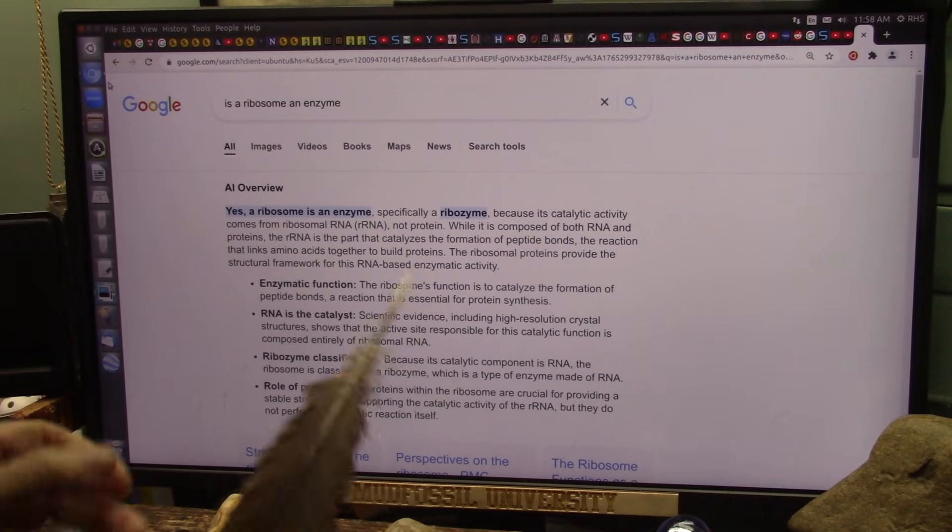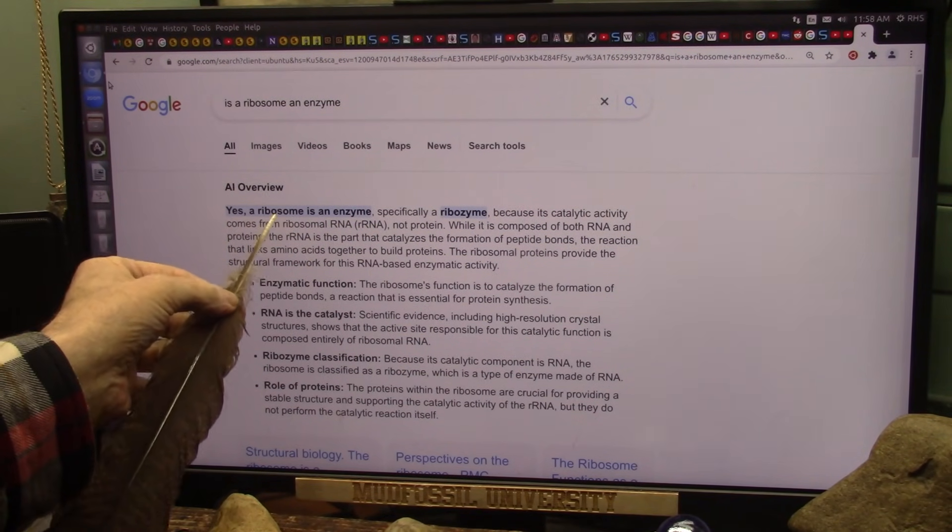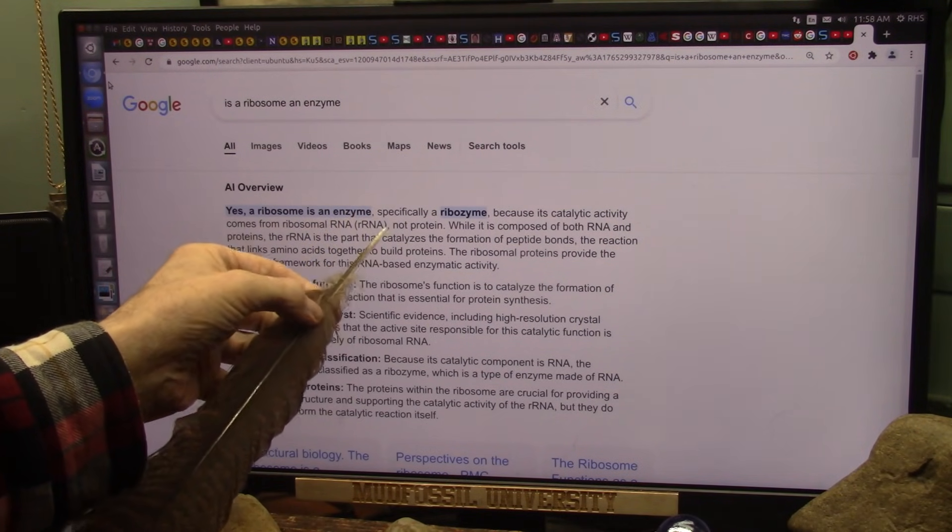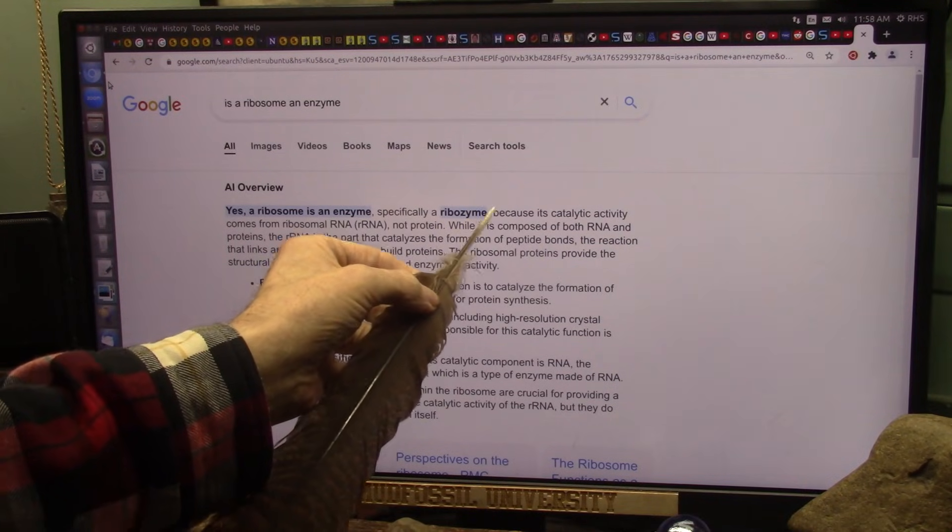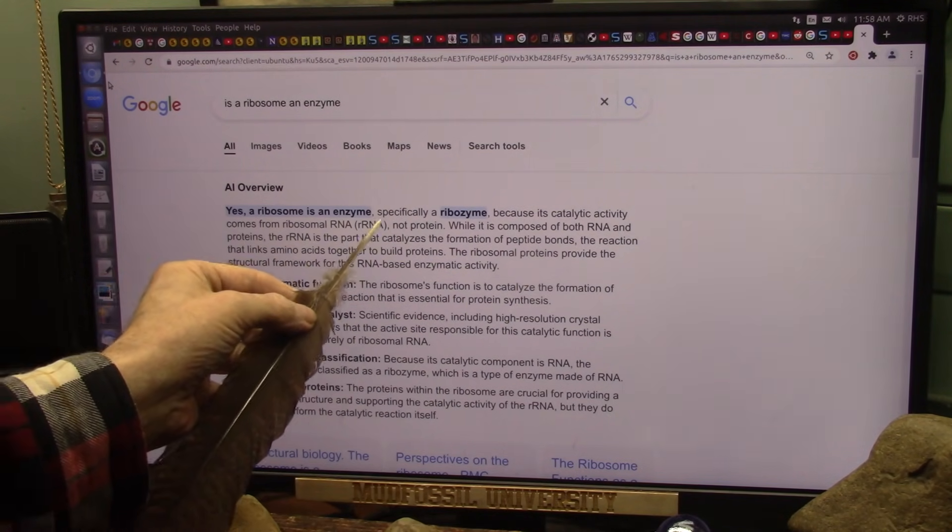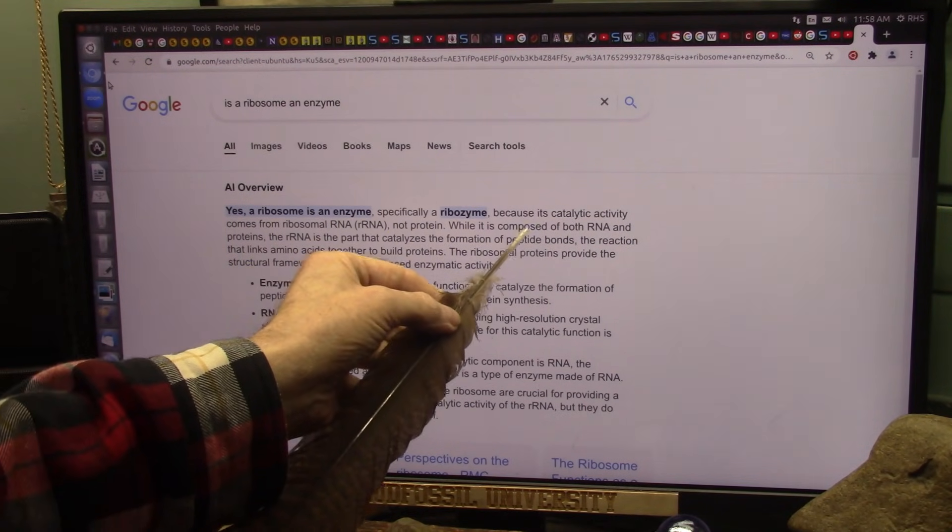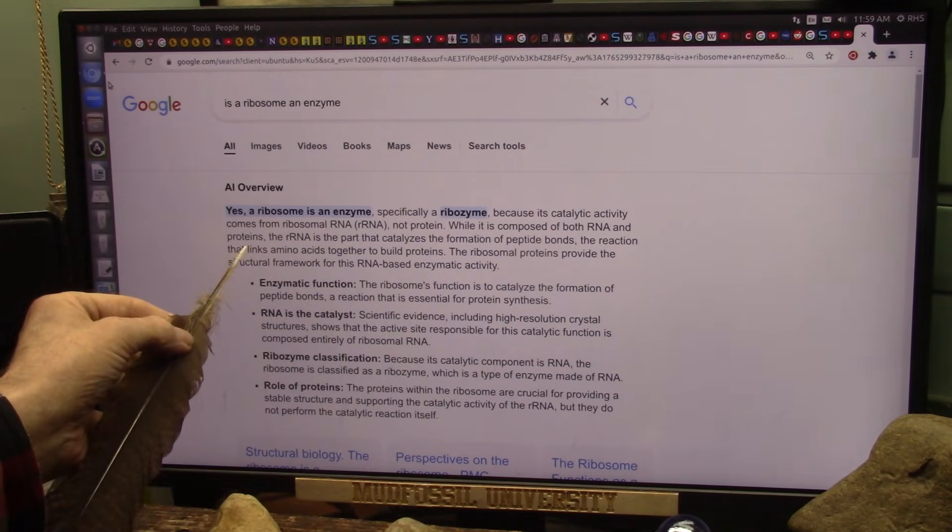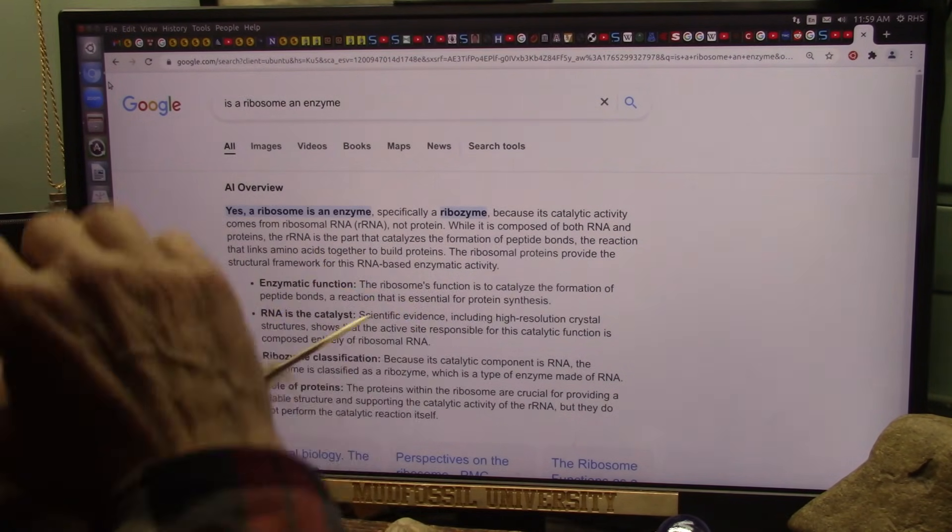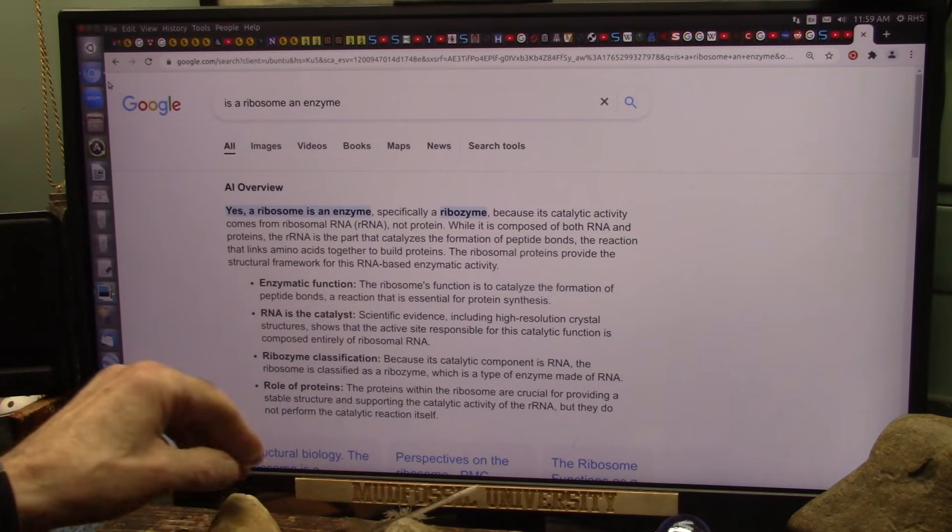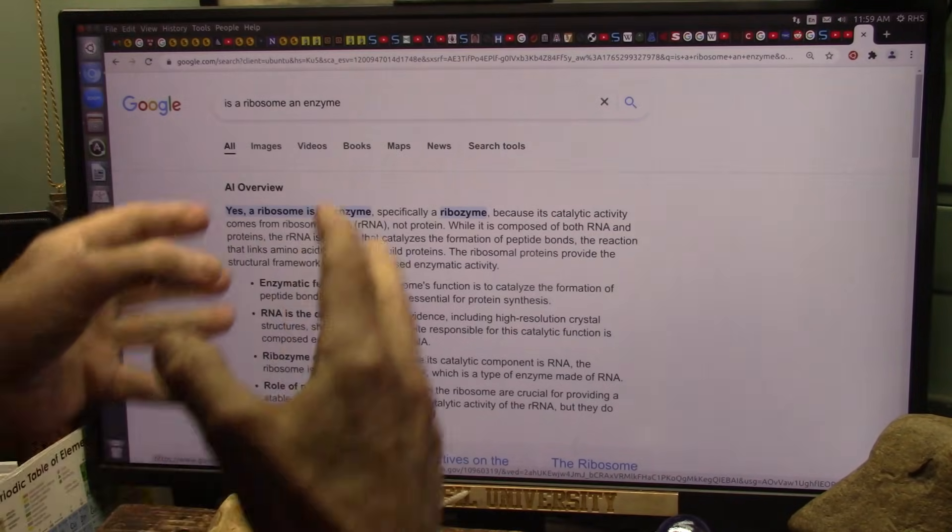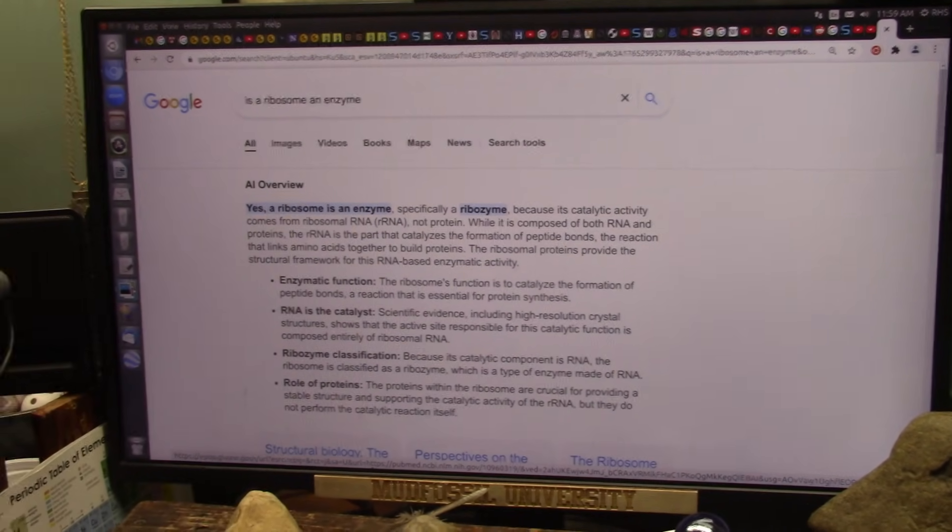Just to show you, here's what it says. Yes, ribosomes are, a ribosome is an enzyme. Specifically, they call it a ribozyme because its catalytic activity comes from ribosomal RNA, not protein. It is composed of both RNA and proteins. RNA is the part that catalyzes the formation of peptide bonds. It goes on and on, a bunch of stuff. But it's the enzyme. A ribosome is the enzyme. You don't have the bacteria, you don't have the ribosome. How much simpler could it get?